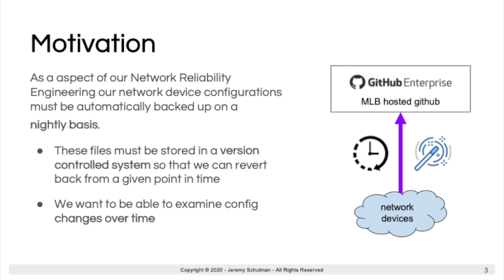Our motivation really is to increase our ability in network reliability engineering. As part of that, we want to automate our backup configurations nightly. We need to put that into a version-controlled system so that we can examine or revert back to any point in time. One of the things we're often asked to do is look at changes over time — what's changed between today and yesterday, or did anybody make an ACL change that involved a specific IP address? I'm going to show you the solution we put together with NetBox and some other components.